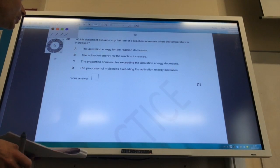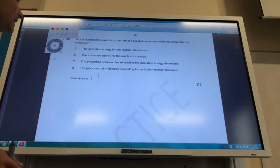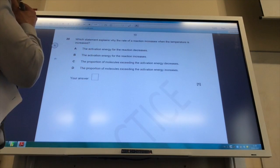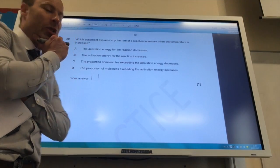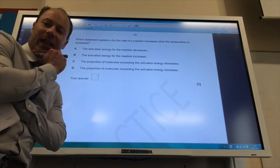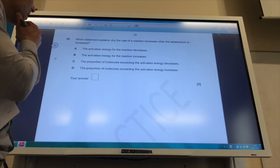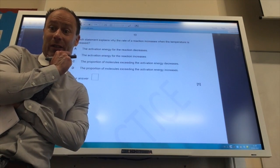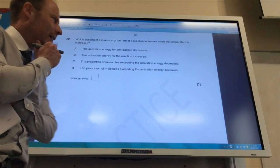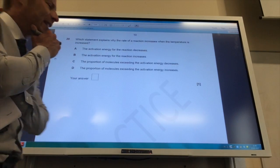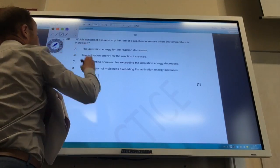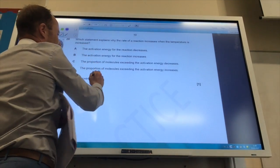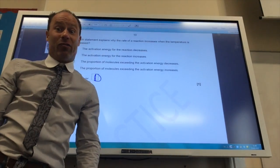Finally, which statement explains why the rate of reaction increases when the temperature is increased? The activation energy for the reaction decreases. No, the activation energy stays the same with temperature. Only decreases when you put a catalyst in. Activation energy for the reaction increases. That's got to be wrong. The proportion of molecules exceeding the activation energy decreases. It's the opposite. So the answer is D. The proportion of molecules exceeding the activation energy increases.